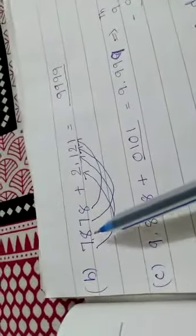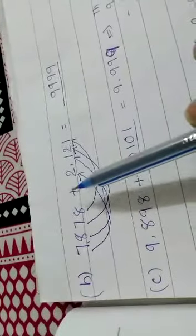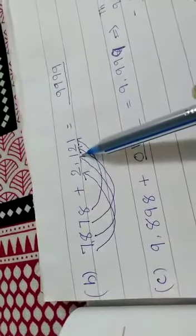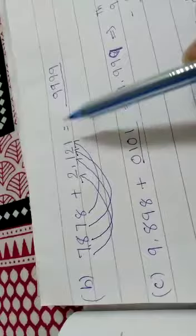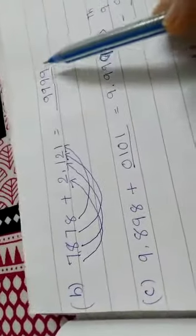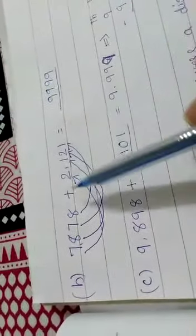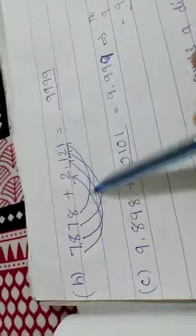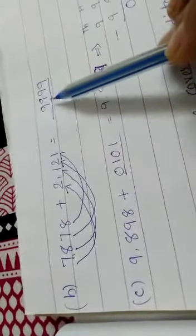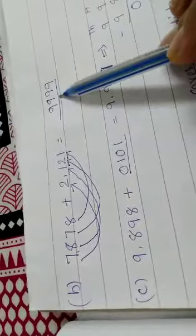Part B: 7878 plus 2121 equals blank. For this answer, we will add both numbers horizontally and we will find the answer, which is 9999.